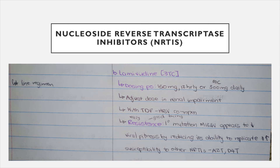Lamivudine dosing is 150 milligrams 12-hourly or 300 milligrams once daily — we always aim for once daily to improve adherence. Lamivudine is mostly part of a fixed-dose combination — usually one tablet with four medications in it. If the patient has renal impairment, you need to adjust the dosage because if they can't break down the drug, giving more puts pressure on the liver. It's paired with tenofovir if you also have a hepatitis B infection.